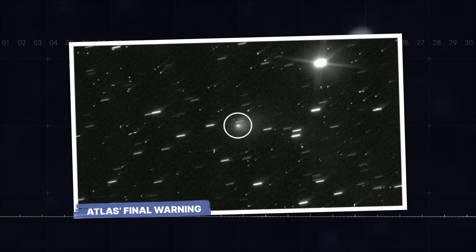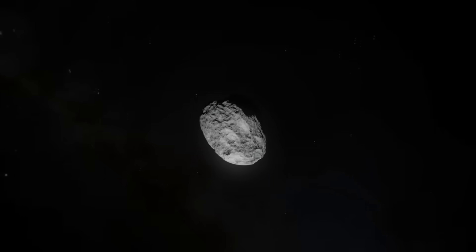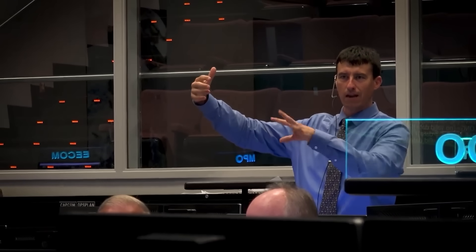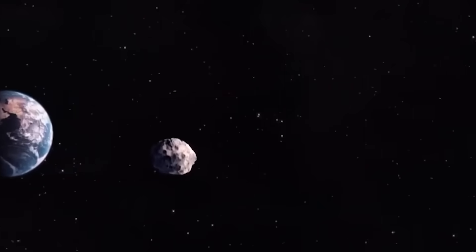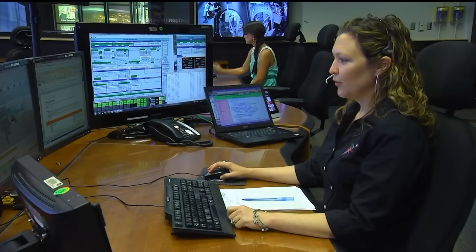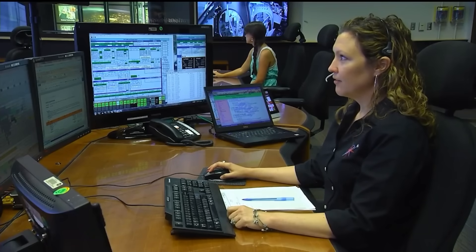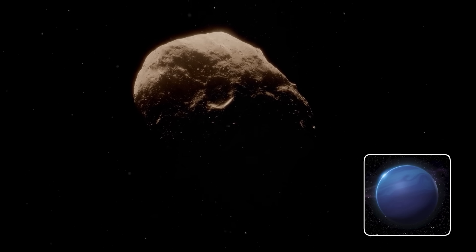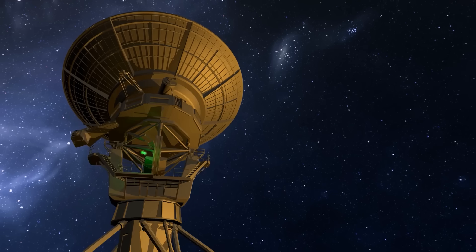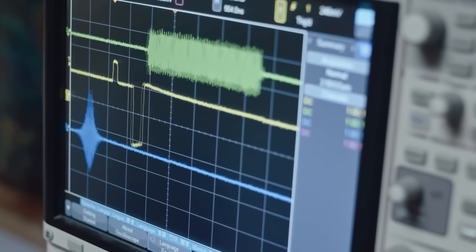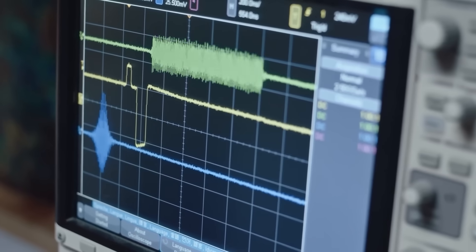Atlas's final warning. As 3i Atlas began its long journey back out of our solar system, scientists figured the mystery would remain unsolved forever. But they were wrong. Just as the object passed the orbit of Neptune, on the very edge of our ability to track it, radio telescopes around the world detected a single, powerful, and unmistakably artificial signal emanating from it.